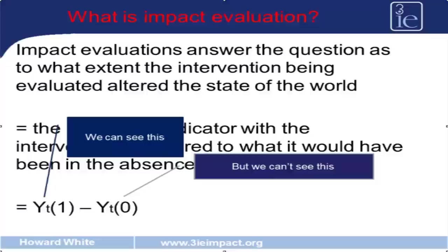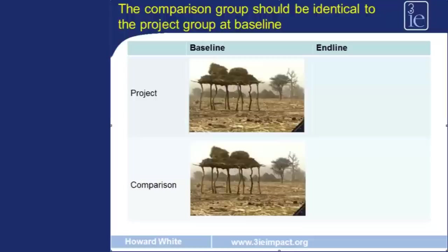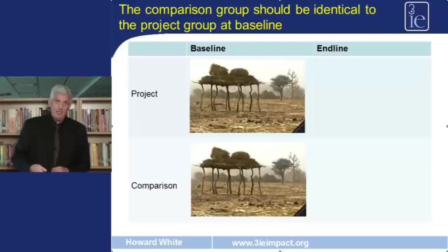To know what would have happened in the absence of the project, we use a comparison group. A comparison group is a group that has, on average, the same characteristics as the project area — such as household asset holdings, education levels of the household head, different livelihoods, activities, employment, and agricultural production. On average, these characteristics would be the same in project areas and comparison areas, so the two areas are equivalent at baseline.